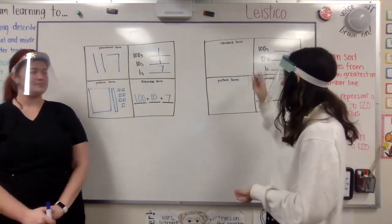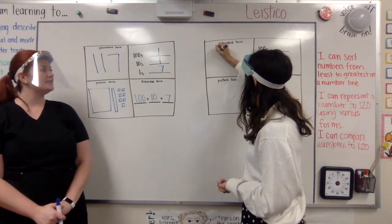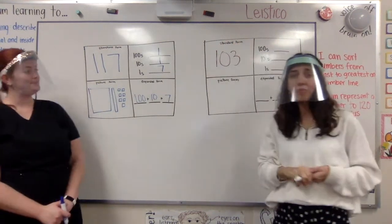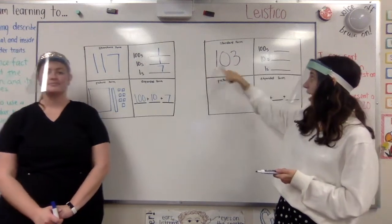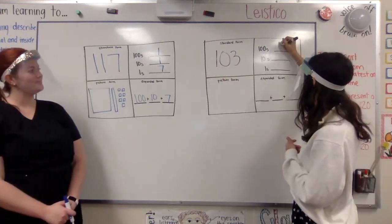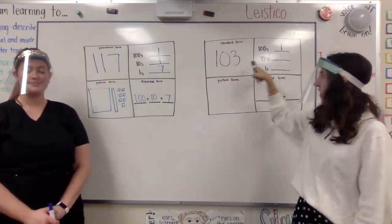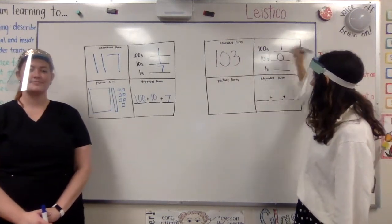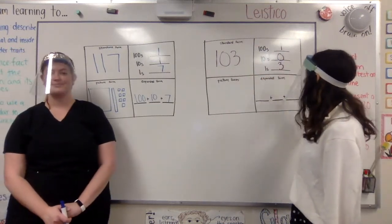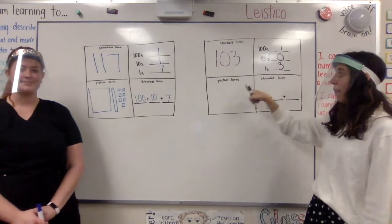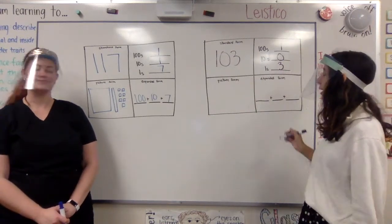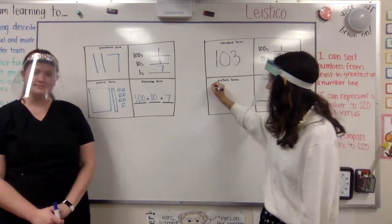Well, I'm going to pick another number. I'm going to pick the number 103. So I am looking at my number reading it from left to right. I know that I have 1 in the hundreds place, I have a 0 in the tens place, and then I have a 3 in the ones place. And so this will help me draw my picture form because it tells me how many of each type of number I need to draw.